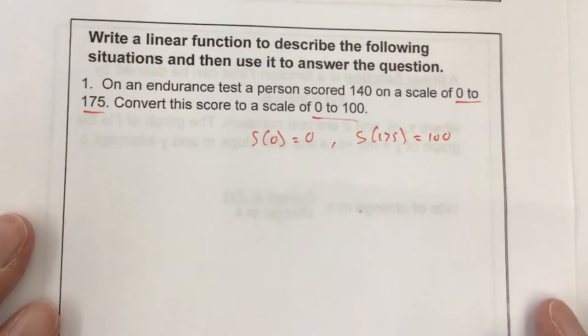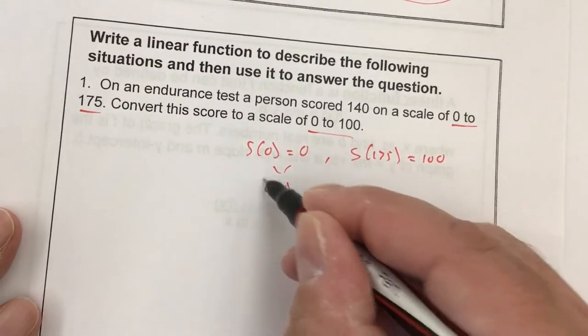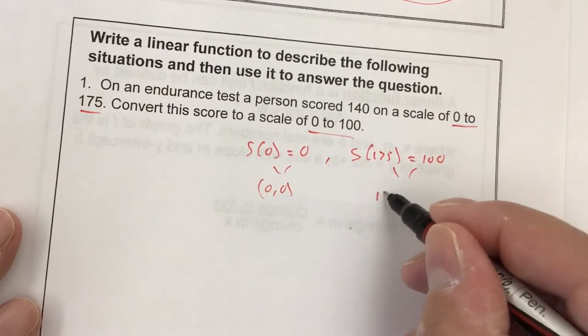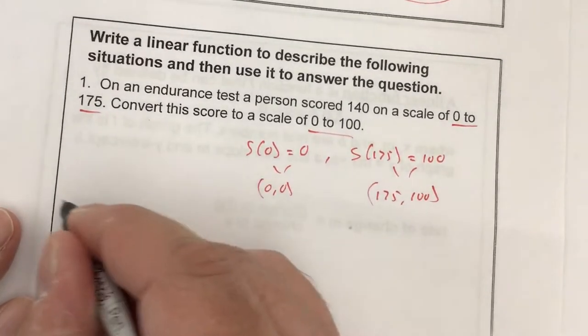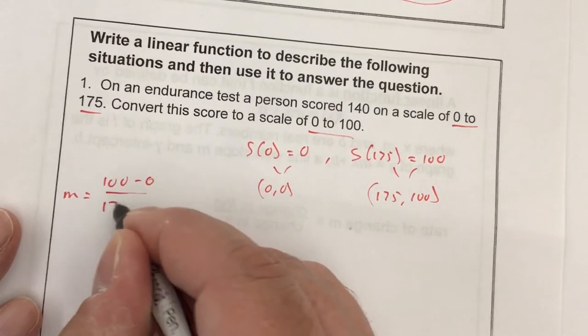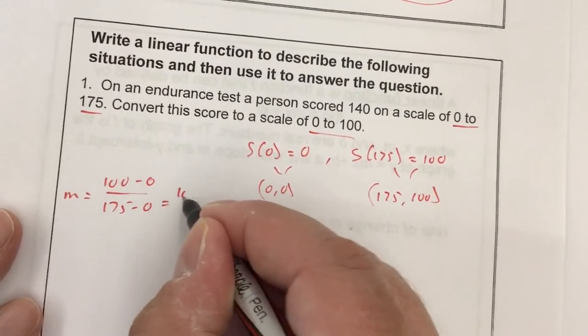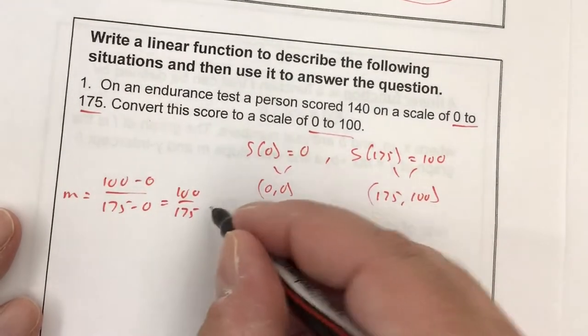Now since I have that set up, this is just like having two ordered pairs. I have the ordered pair (0, 0) and the ordered pair (175, 100). So the first thing to do is find a slope: 100 minus 0 over 175 minus 0. 100 over 175 becomes 4/7.